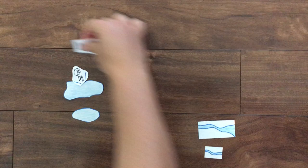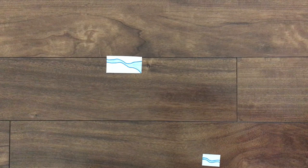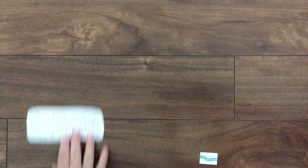Does the speed of the river affect the rate at which sediment is deposited at the delta? And finally, why does erosion occur more rapidly around lotic water?